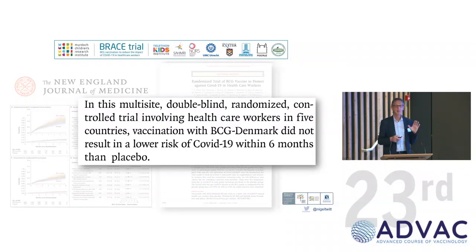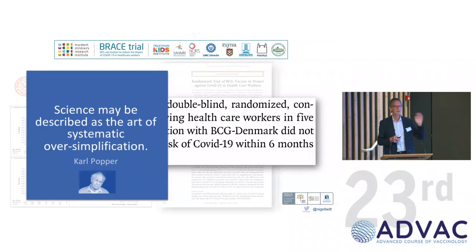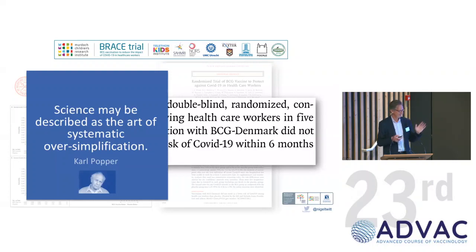And so this was reported in the New England Journal of Medicine just two weeks ago: that in this multi-site, double-blind, randomized controlled trial involving healthcare workers in five countries, vaccination with BCG Denmark did not result in a lower risk of COVID-19 within six months than placebo. Now that is completely true, but it is a massive oversimplification. The New England Journal is very strict about p-values — it's either yes or no — and I want to explain that there are some subtleties and caveats that are important to communicate.